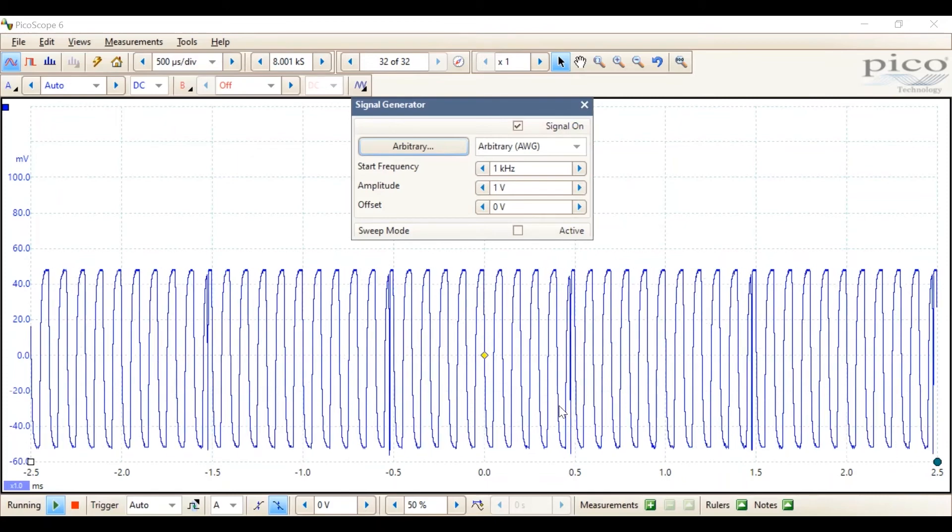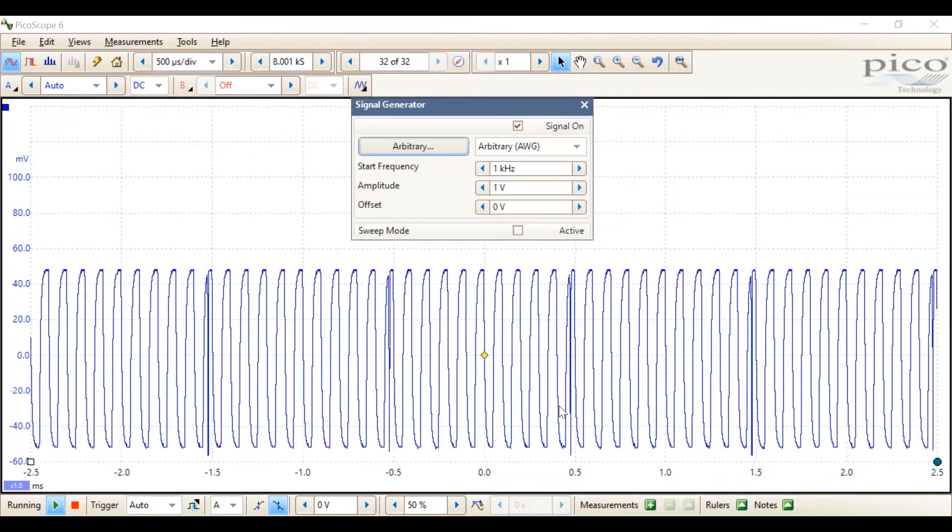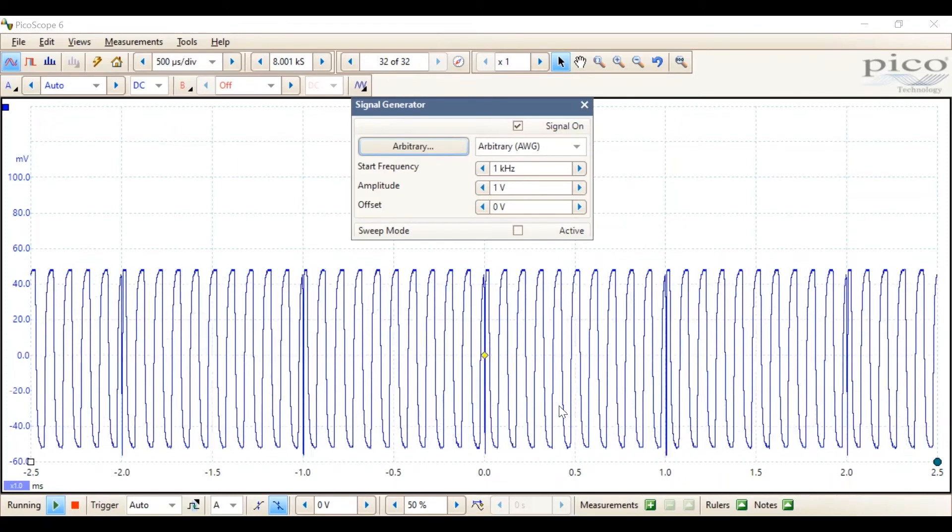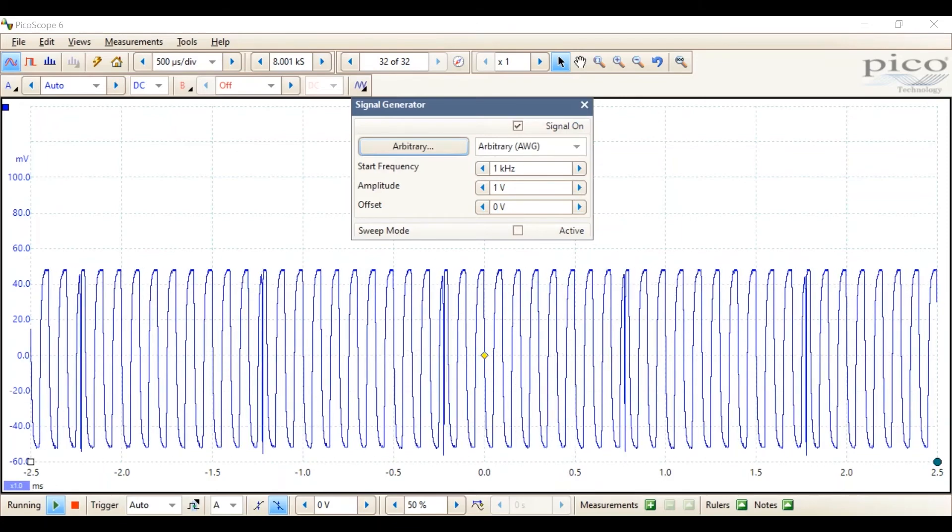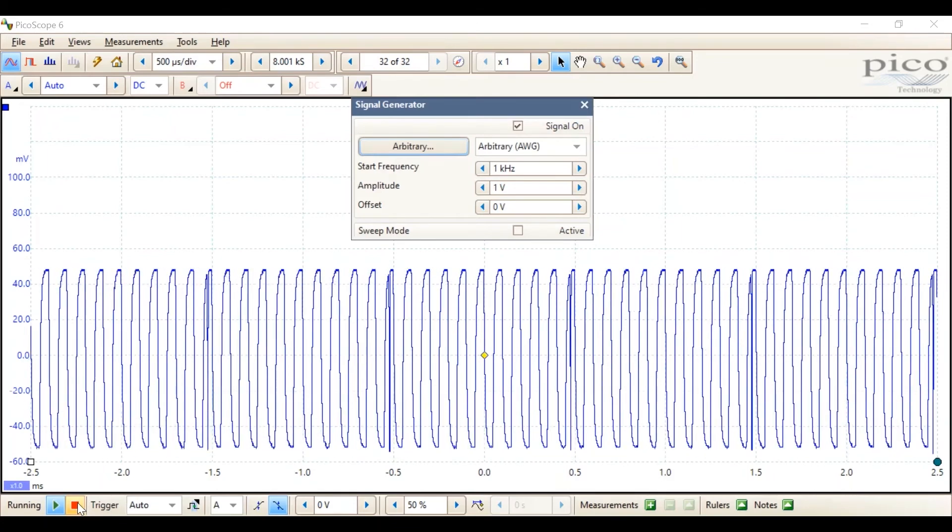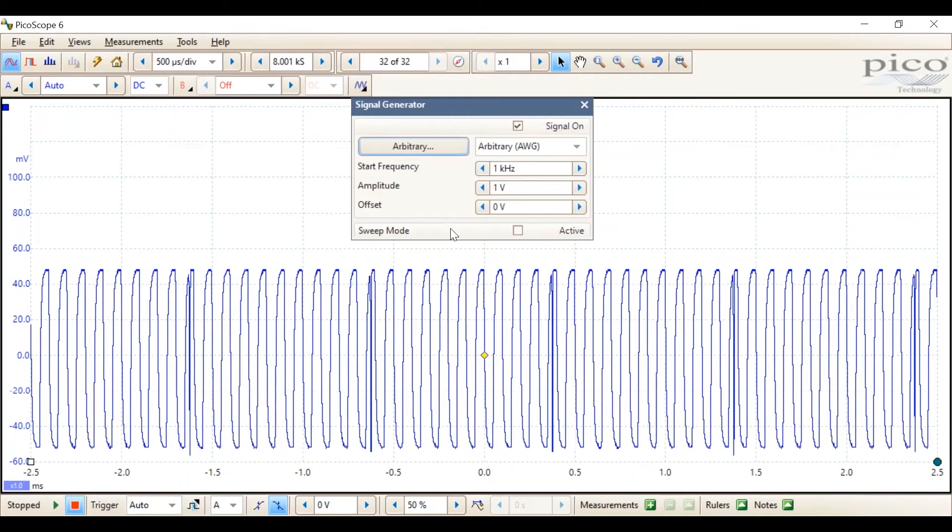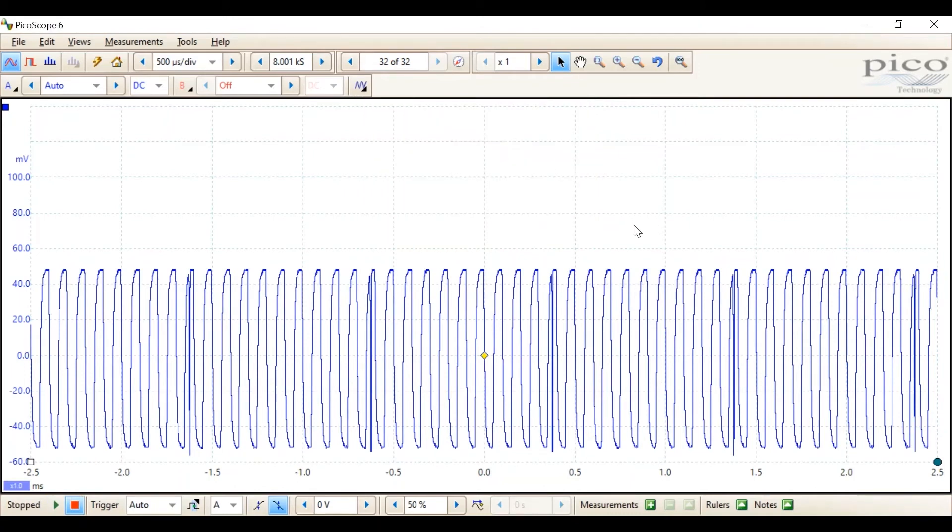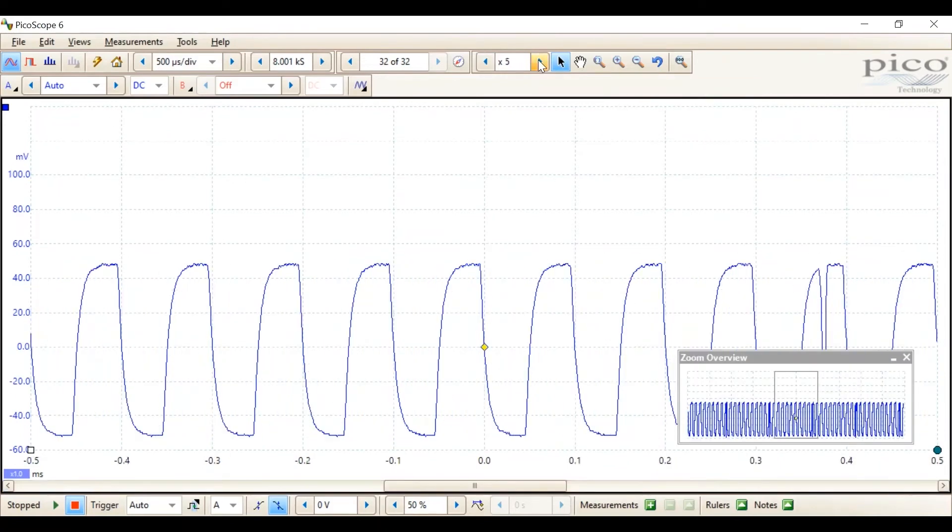But first, I need to know what a normal pulse width is. So, first I'm going to stop the trigger. And at the moment we can come out of the signal generator. Now we're not going to adjust that any further.